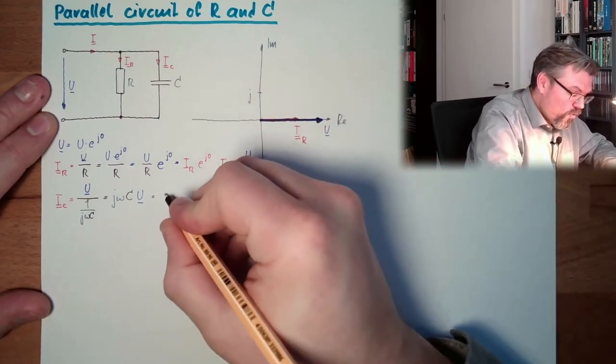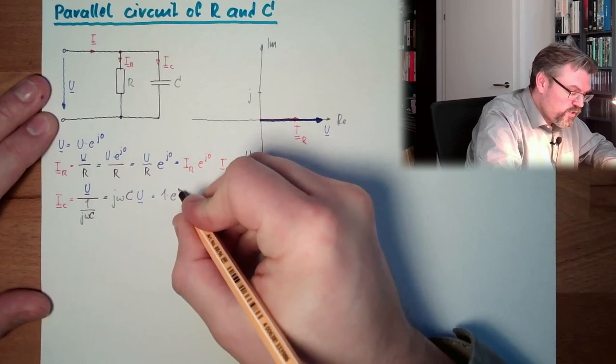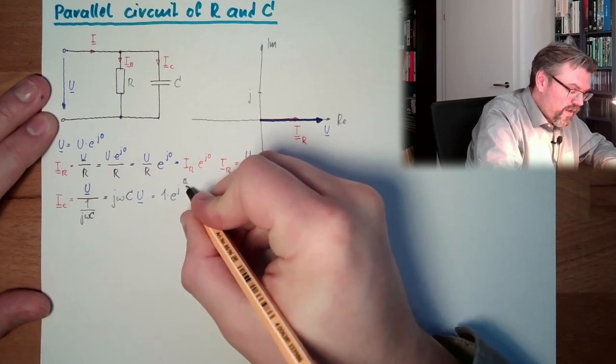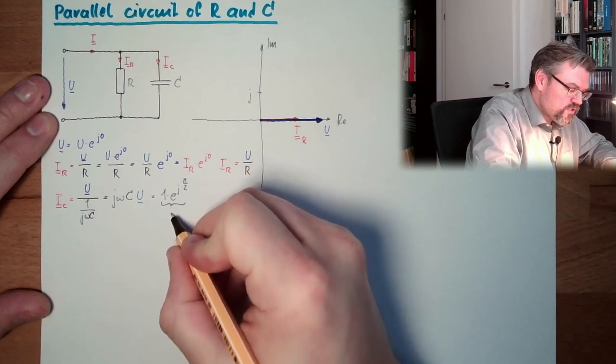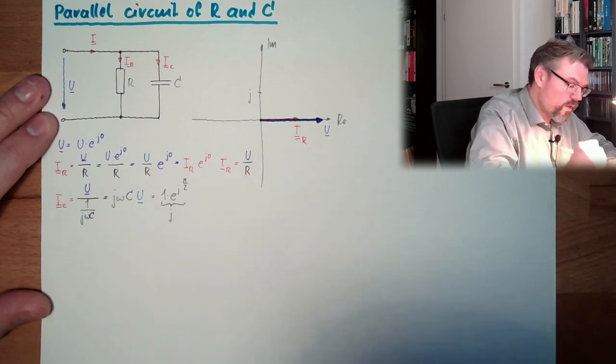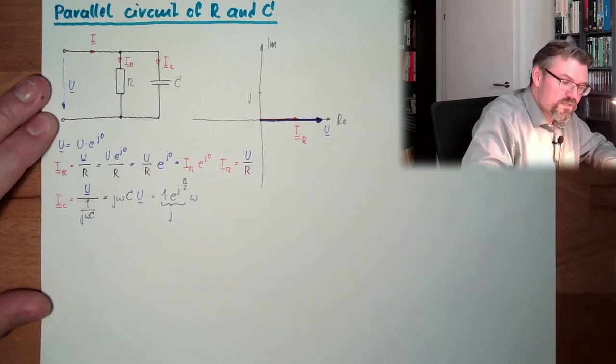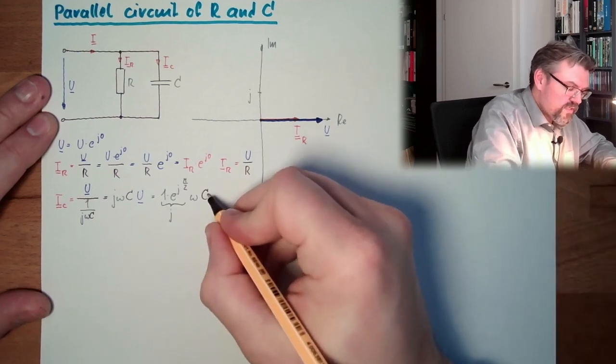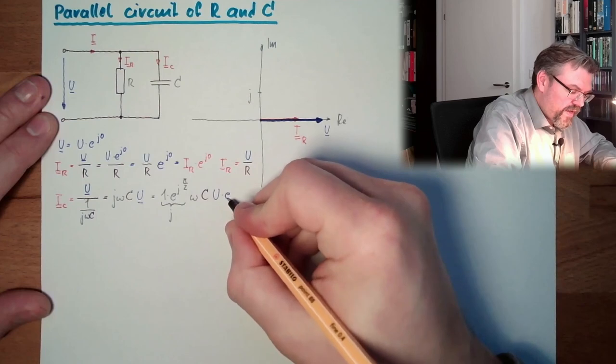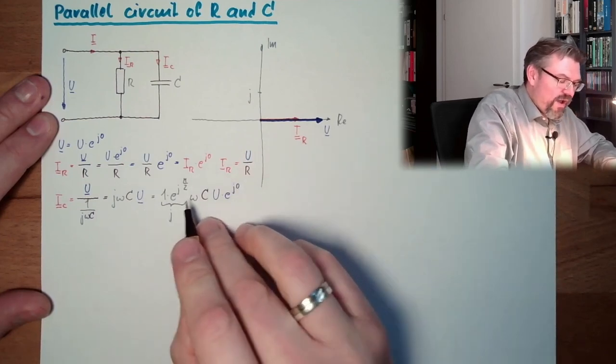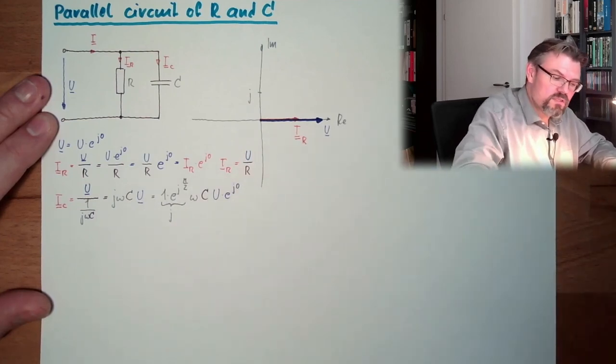So we have here 1 multiplied by e^(jπ/2). This is j. What is still missing is omega, what is still missing is C, what is still missing is U. And U is U divided by e raised by the power of j zero.